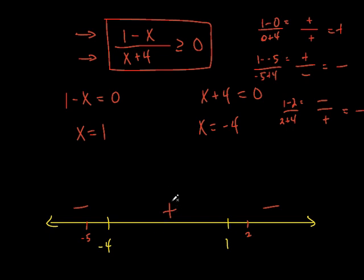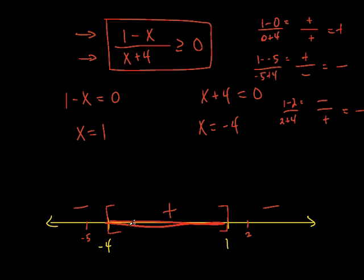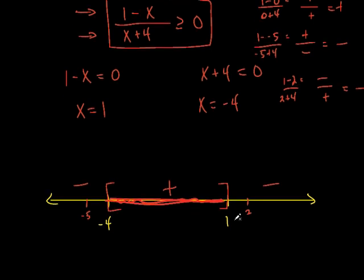We're looking for values that make this thing positive — greater than zero. That's everything in between negative 4 and 1. Since it says or equal to, we use brackets. Graph shows brackets at negative 4 and 1 with shading in between. Interval notation: bracket, negative 4, comma, 1, bracket. Any number between negative 4 and 1 satisfies this rational inequality.